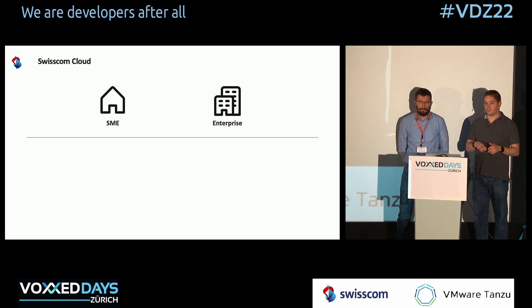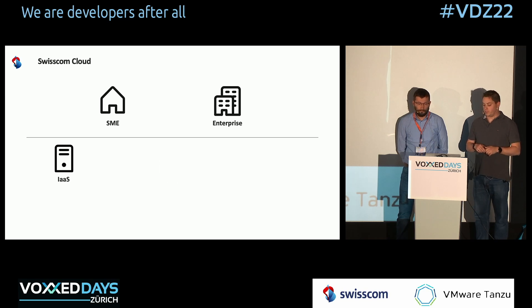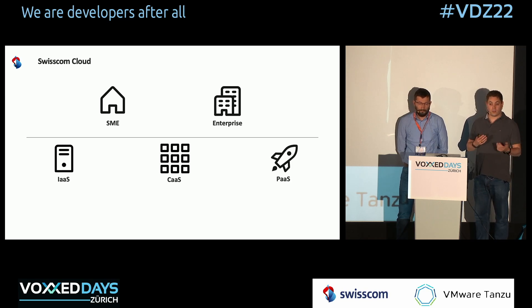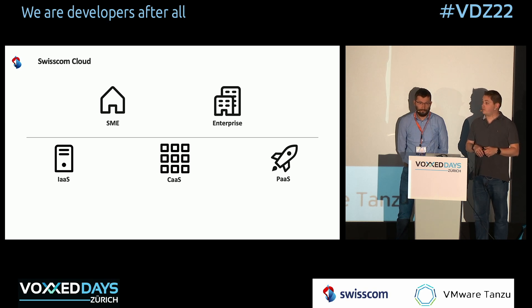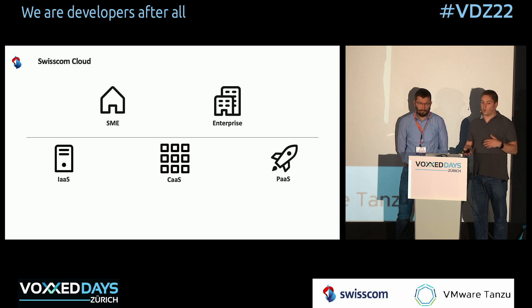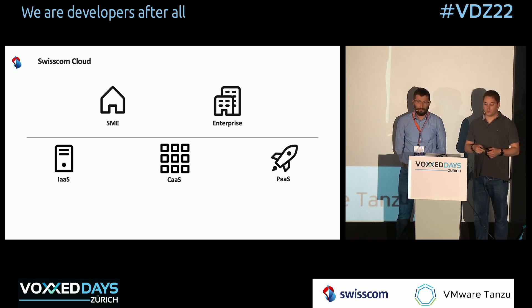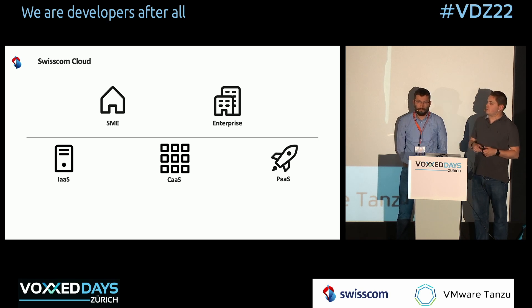We have two types of customers: small and medium enterprises as well as large enterprises, each with different requirements. We provide infrastructure as a service — classical virtual machines — container as a service based on Kubernetes, and platform as a service based on Cloud Foundry.